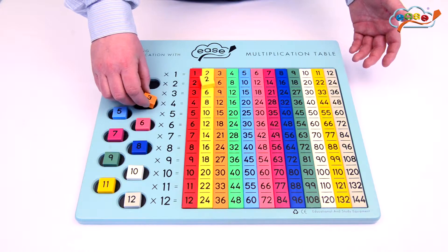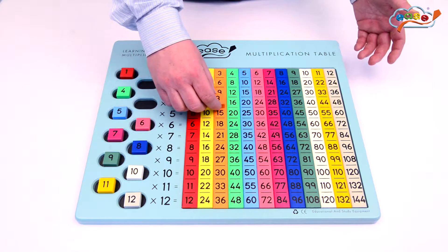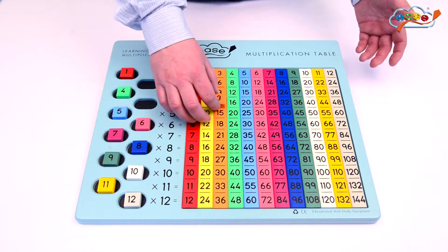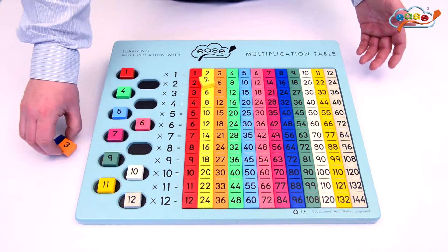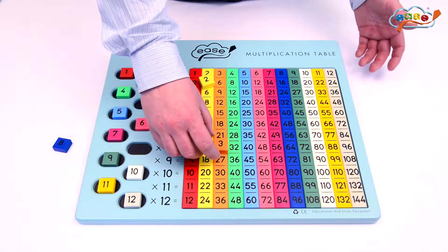The same way we can see, for example, 3 4's: 1, 2, 3 4's are 12, which is orange with orange. That can be demonstrated, for example, 3 8's are 24.